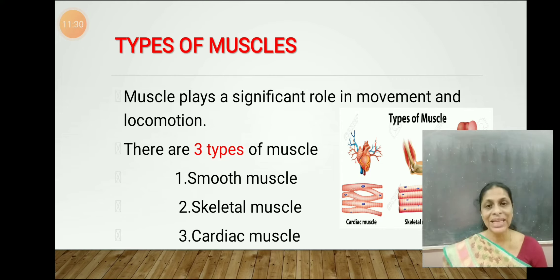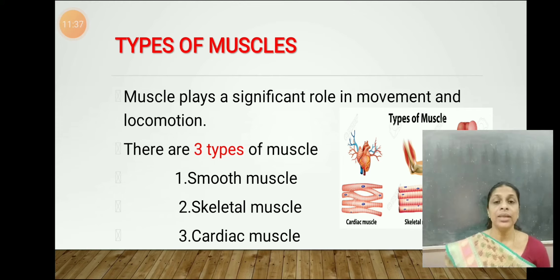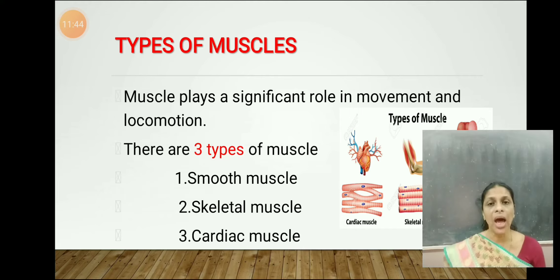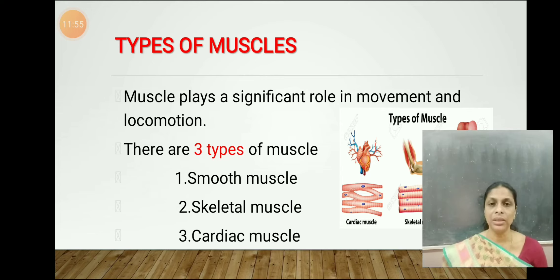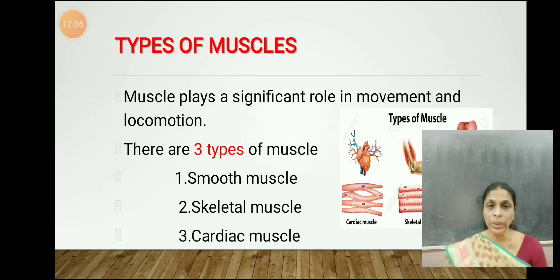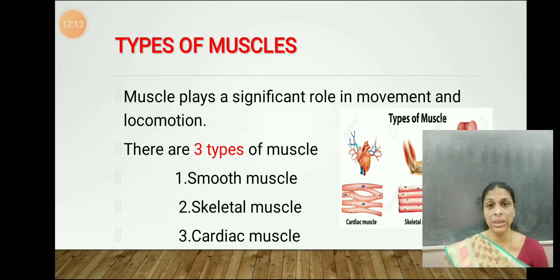The second type is skeletal muscles, which are also called striated muscles or voluntary muscles — voluntary meaning they are under our control. The third type is cardiac muscles, found attached to the heart, and they are again involuntary muscles.